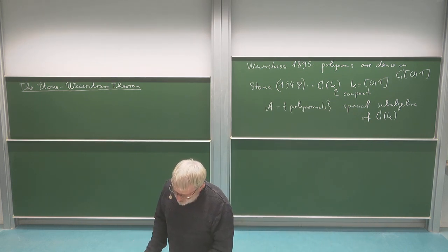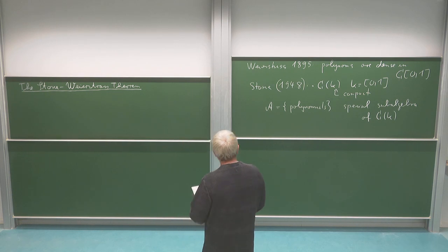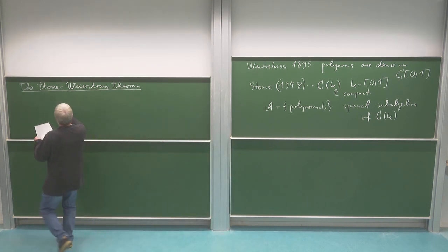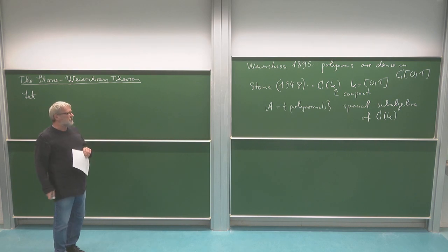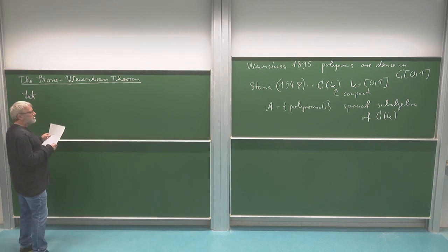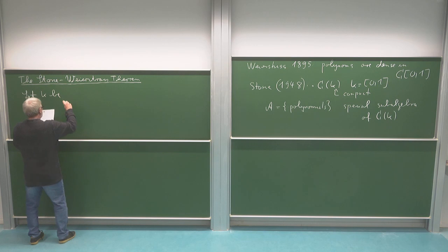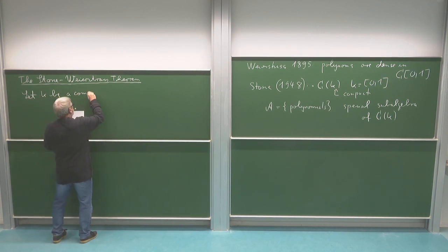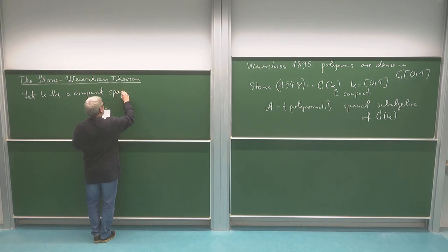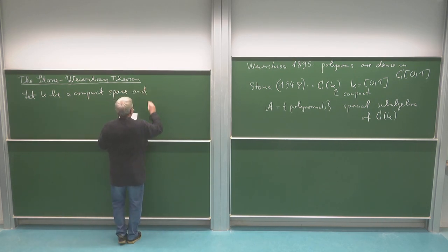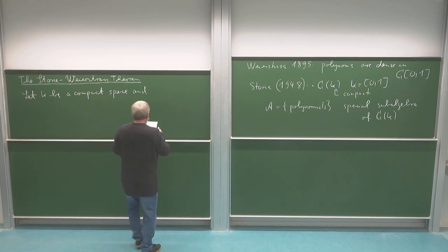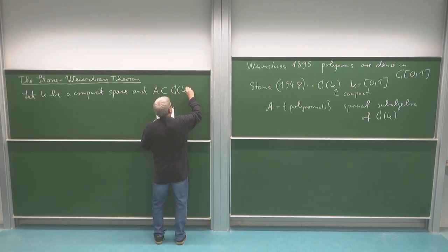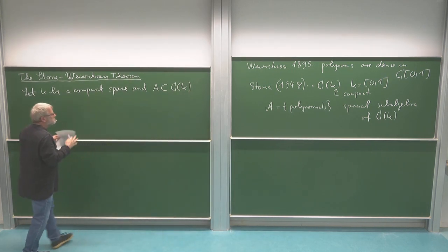Maybe let me right away formulate the theorem of Stone-Weierstrass, and then I will be more precise. Here is the theorem. So we look on continuous functions, but not on an interval in R, but it can be functions on a very big set, and the important point is that this set has to be compact. So let K be a compact space or set. Then I look on the continuous functions on this set and I consider a subset of this which classically are the polynomials. But now I consider A, and this is a subset of the continuous functions on K, and this should have some properties.